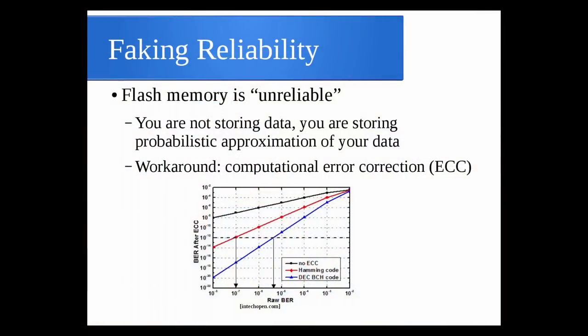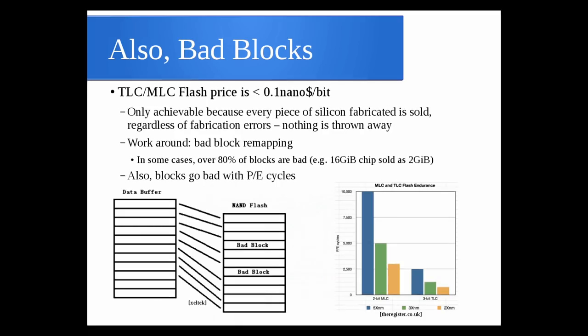A little bit about why the microcontroller is actually necessary: flash memory is unreliable — incredibly unreliable. You don't want to look under the hood and see the sausage inside. You're not really storing your data; you're storing a probabilistic approximation of your data. They do a lot of workarounds — for example, ECC. Your bit error rate may be absolutely terrible, but they use very sophisticated high-density codes to correct block and bit errors. There are also lots and lots of bad blocks.